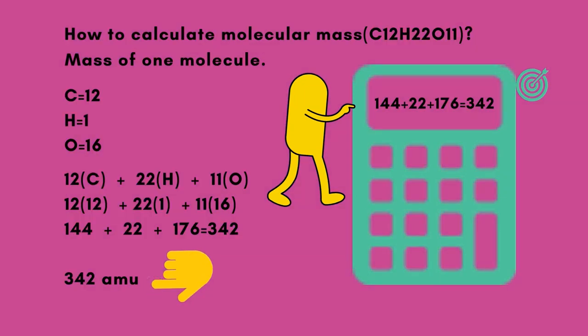How to calculate molecular mass of C12H22O11? Mass of one molecule. C equals 12, H equals 1, O equals 16.